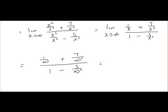Remember, anything divided by infinity is equal to 0. 1 over infinity gives us 0. 7 over infinity cubed is 7 over infinity, which is 0 also. So that gives us 0 over 1, which is equal to 0.